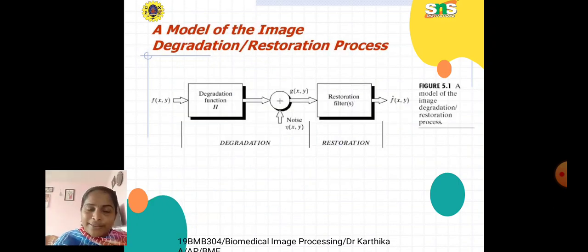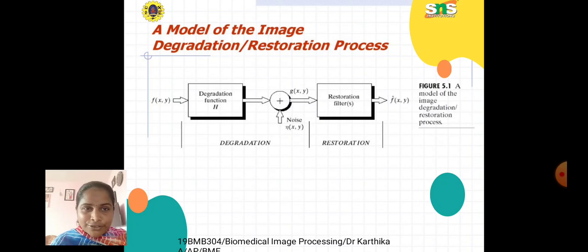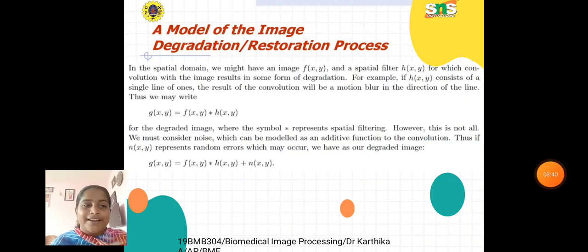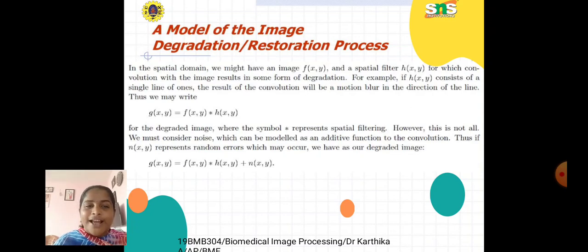Here is a model of the image degradation and restoration process. The input image f(x,y) is fed into the degradation function h, and the output of the degradation function is added with noise e(x,y) to produce g(x,y), which is then passed to the restoration filter. The first part is degradation, then we move into the restoration part, and finally we get f̂(x,y) as the output.